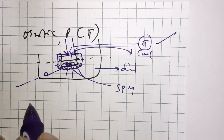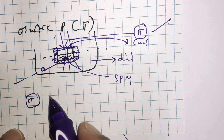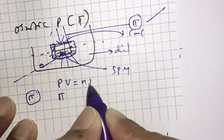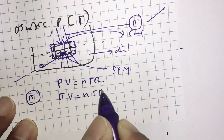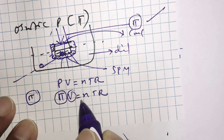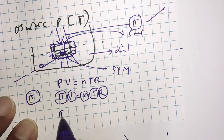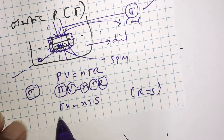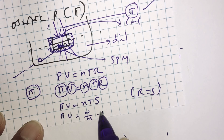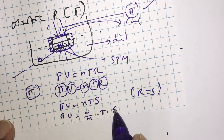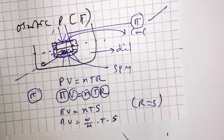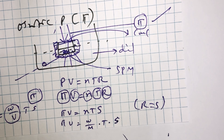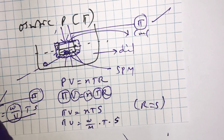Osmotic pressure measurements provide an excellent method to find the molar mass of a given solute. Osmotic pressure behaves like the pressure of an ideal gas obeying PV equals nRT; similarly, pi times V equals nRT. Here, pi is osmotic pressure, V is the volume of solution, n is the number of moles of solute dissolved, T is the temperature, and R is the universal gas constant. Rearranging: pi times M equals (weight divided by volume) times RT, where weight by volume is essentially concentration. All these relationships can be used to compute the molar mass of a given solute.